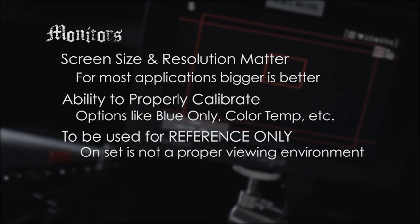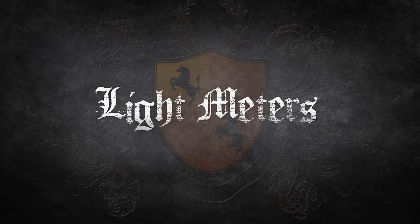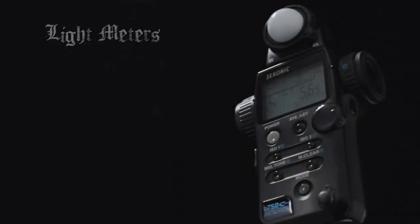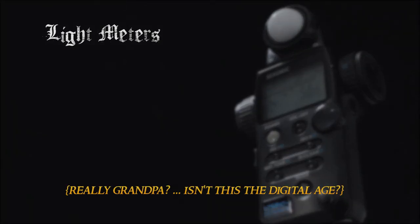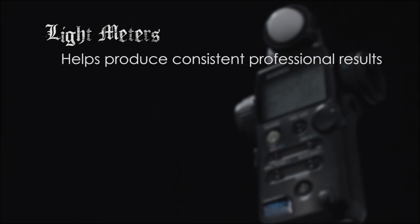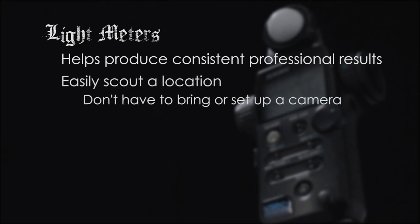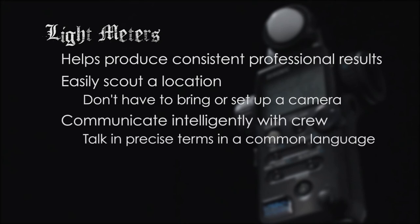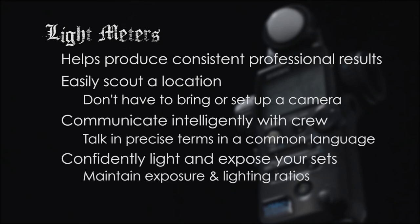And that segues nicely into the last part of the camera system. The light meter is the most integral part of the camera system, in my opinion. As cinematographers, our role is to shape the telling of the story through careful placement of light and camera movement, and the light meter is the tool that will help you produce professional, repeatable results. I'm not going to go into detail here about how or why to use a meter — that's covered in Lighting 101. But the short answer is, the light meter allows you to scout a location, communicate intelligently with your crew, and feel confident about your exposure despite what the monitor might be displaying. The light meter will help you not only control exposure, but control your lighting ratios, and help you do exposure compensation calculations without having to remember all the maths.